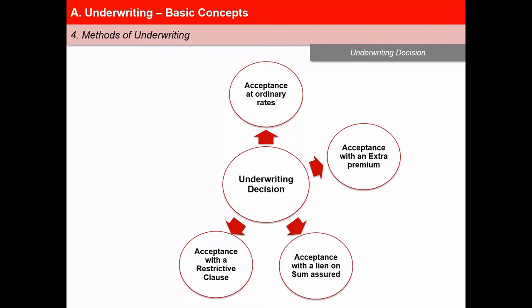And fifth, decline or postpone. A life insurance underwriter may decide to decline a proposal for insurance. This generally happens when there are certain features which are so adverse that they considerably magnify the incidence of the risk.